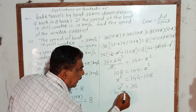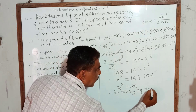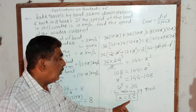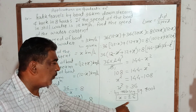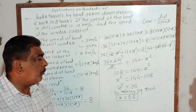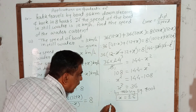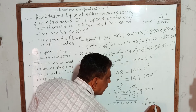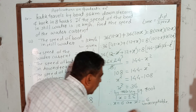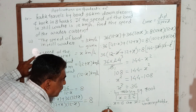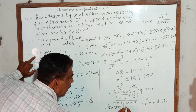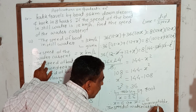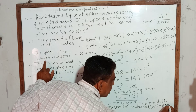Taking the square root, x is equal to plus or minus 6. But here, x represents the speed of the water, and therefore that speed cannot be negative. So we cannot take x equal to minus 6. Therefore, x is equal to 6. The speed of the water current is equal to 6 km per hour.